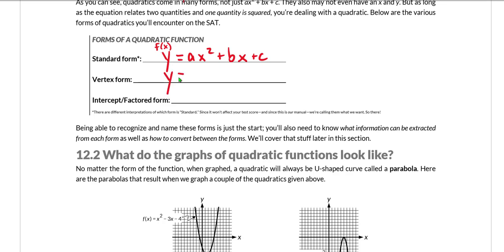The vertex form of a quadratic function is going to be y = a(x - h)² + k.